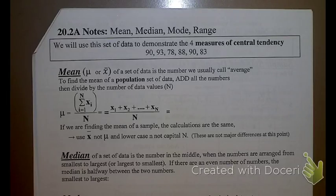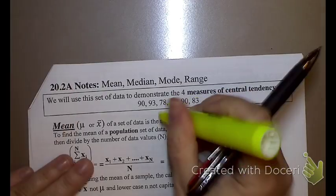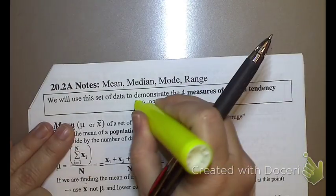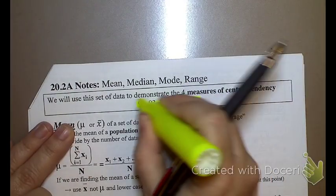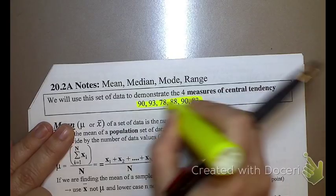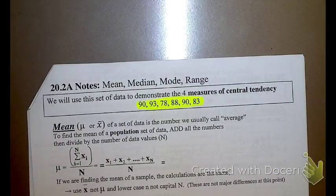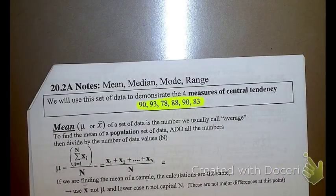So 20.2a, mean, median, mode, range. This is pretty quick, and it's the easiest stuff we do. We are going to start off with a set of data. This is the set of data we're going to use. And we're going to find the mean of it, the median of it, the mode, the range, and the standard deviation. Actually, two standard deviations.